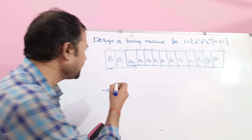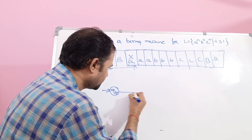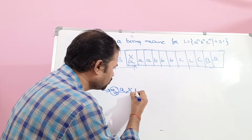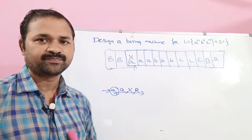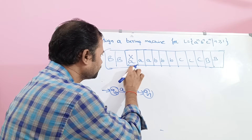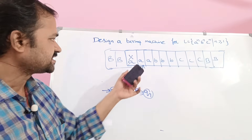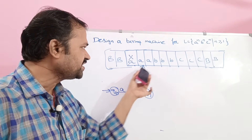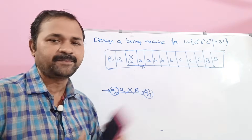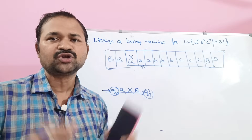If we apply A on Q0, then modify the content to X and move the read/write head towards the right, and change the state from Q0 to Q1. Next, we have to move the head to the right until we get B, so if we apply any number of A's on Q1, don't change them.